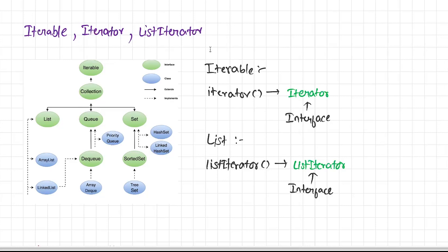If you look at this hierarchy, the first interface on top is the iterable interface. This interface is extended by the collection interface, which means the methods defined in iterable interface are also present in collection interface. Then collection interface is extended by list, queue, and set interfaces.